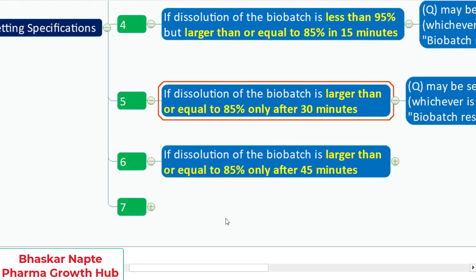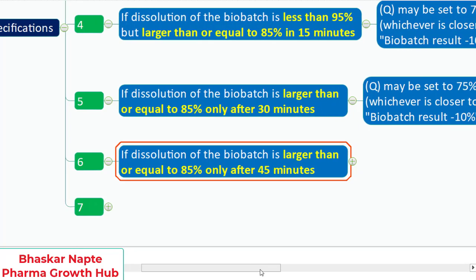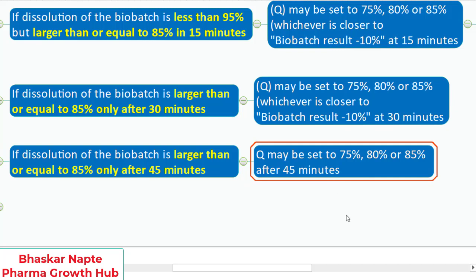Point 6: if the dissolution of the bio batch is greater than or equal to 85 percent only after 45 minutes, the release quantity Q may be set to 75, 80, or 85 percent — whichever is suitable — after 45 minutes, when the dissolution release is equal to or greater than 85 percent.